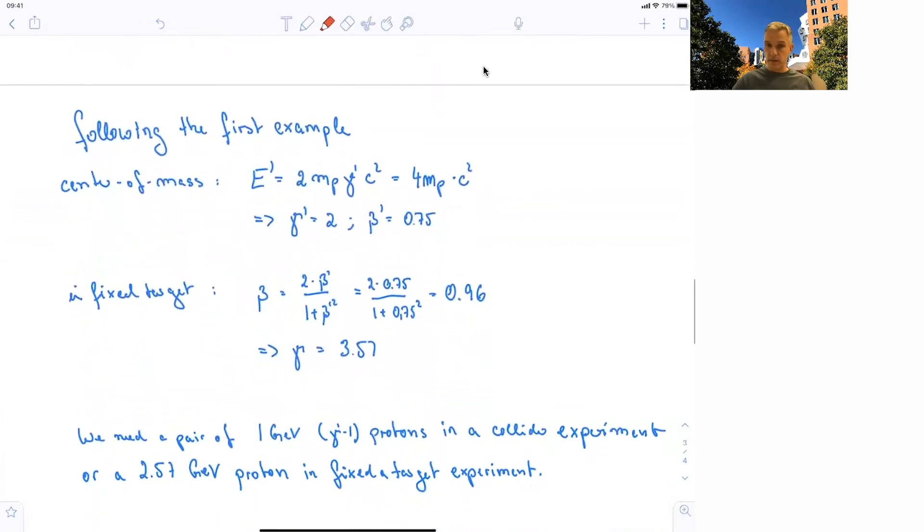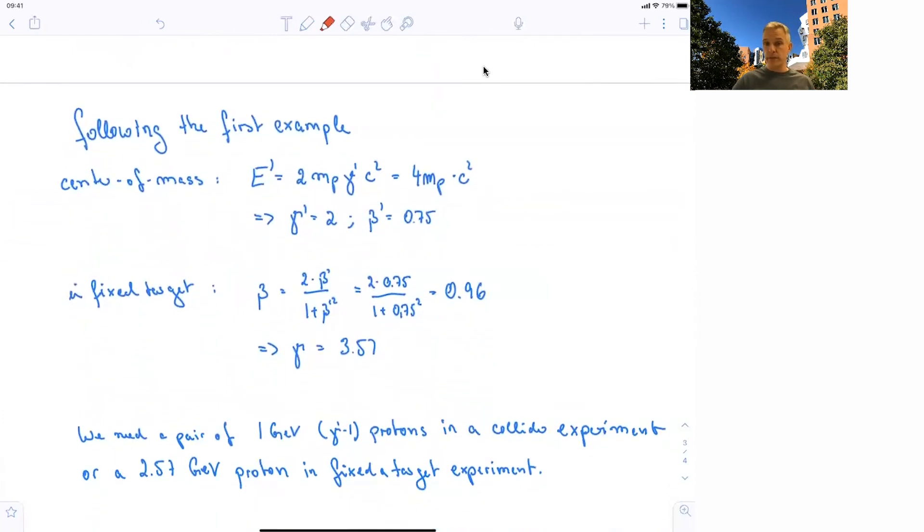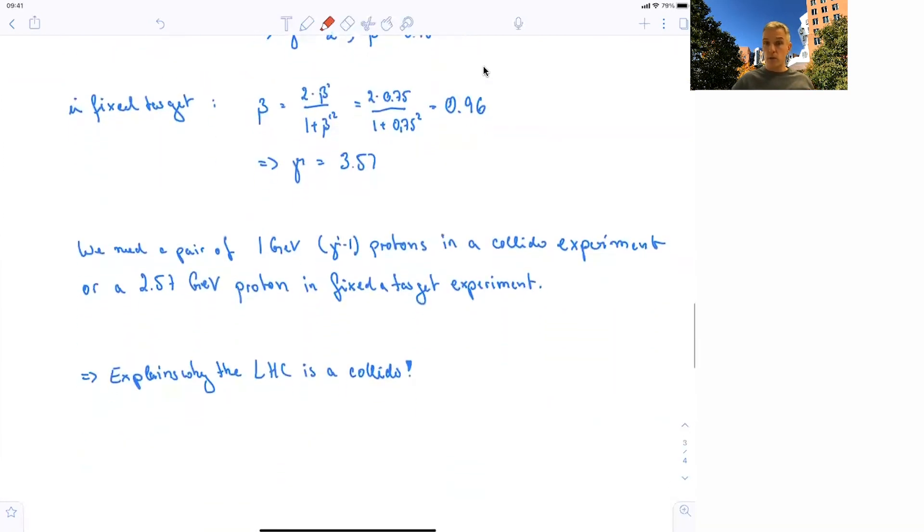So if you compare this now, we need a pair of 1 GeV, remember, gamma minus 1 is the kinetic energy, protons in a collider experiment, or 2.57 GeV protons in a fixed target experiment. So you see that in fixed target experiment, in order to produce new particles, the energy has to be much larger, a factor of 2.5 here in this example, than a colliding experiment. And that explains why we use collider experiments in order to test the energy frontier, in order to produce the largest possible energies. And the LHC is one of examples where we have proton-proton collisions in a circular ring, where those protons are brought together in symmetrical collisions.